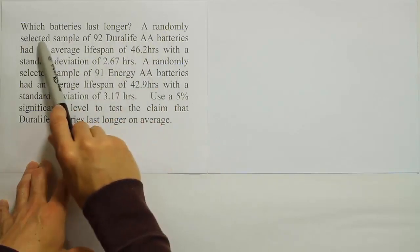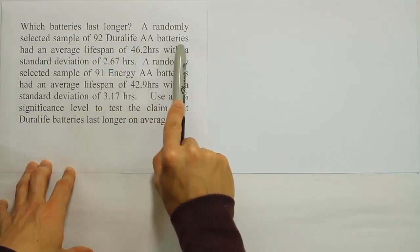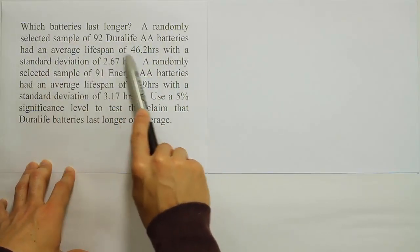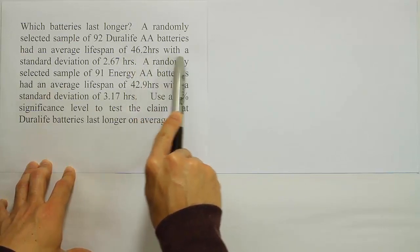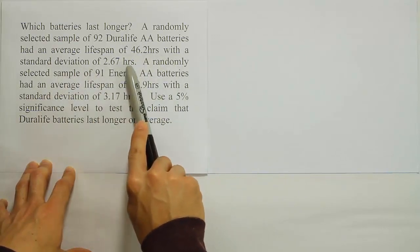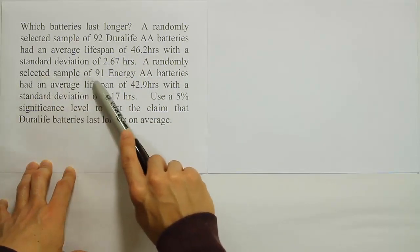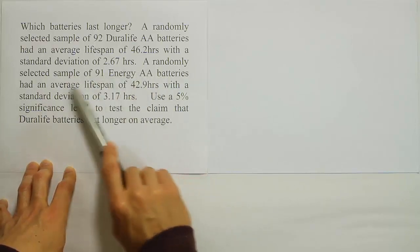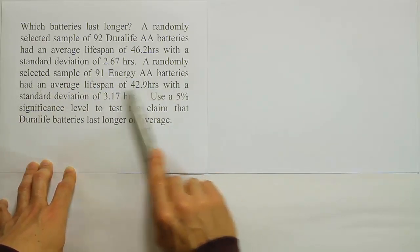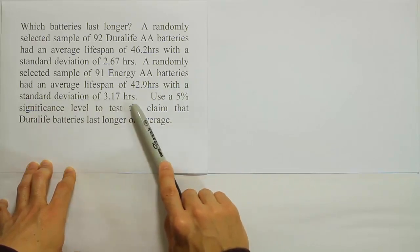Which batteries last longer? A randomly selected sample of 92 Duralife AA batteries had an average lifespan of 46.2 hours with a standard deviation of 2.67 hours. A randomly selected sample of 91 Energy AA batteries had an average lifespan of 42.9 hours with a standard deviation of 3.17 hours.